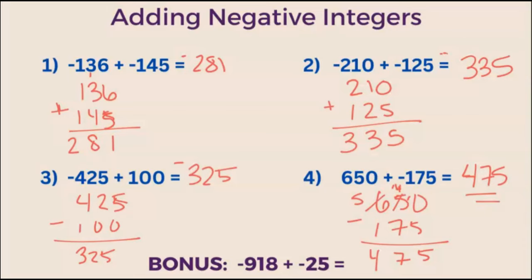Now that we've walked through 4 examples, try this bonus question on your own. What is negative 918 plus negative 25? Leave your answer in the comments.